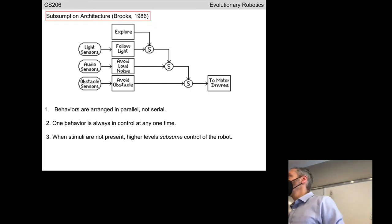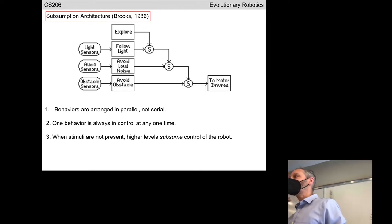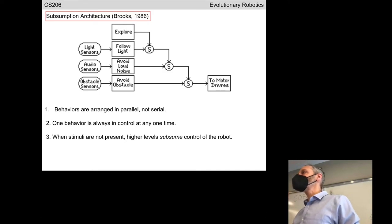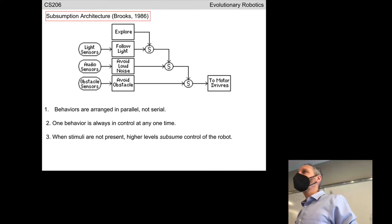Rod Brooks, who formulated the subsumption architecture, was the director of the AI lab. He gave up that post — probably the most coveted post in all of AI and robotics — and went off to found a robotics company called iRobot, whose most famous product is the Roomba. The subsumption architecture is what is running inside the Roomba: a very simple robot that avoids obstacles, avoids loud sounds like a growling dog, follows the light, and if there's no light, moves uniformly across the floor. Sounds like a great recipe for an autonomous vacuum cleaner.